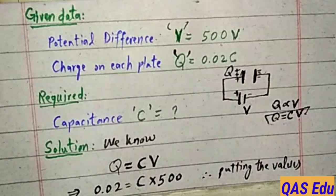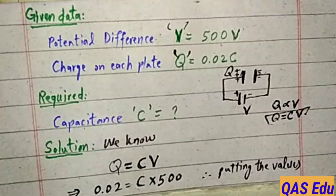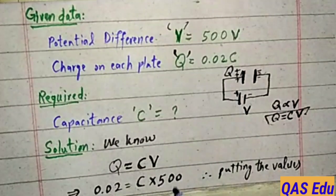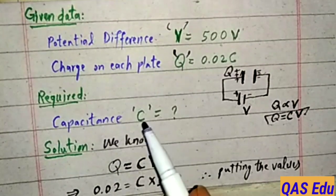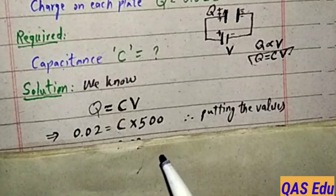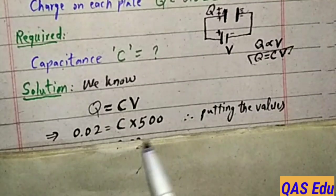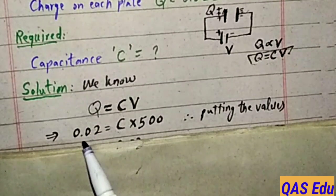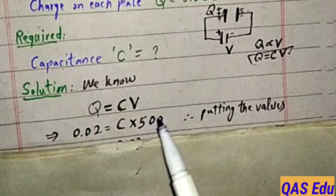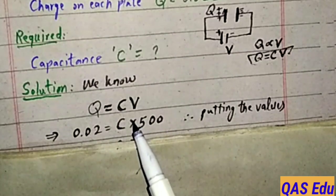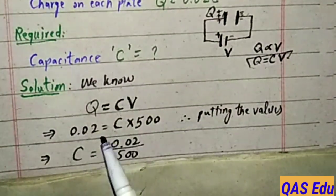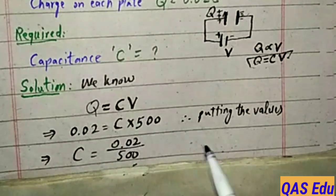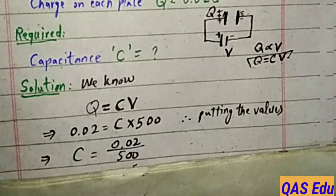0.02, that's the charge value. The unit is coulomb which is SI system. C is unknown. Multiply by V. The V value is 500. Now we need to solve for C. We'll divide both sides by 500. Dividing both sides by 500.